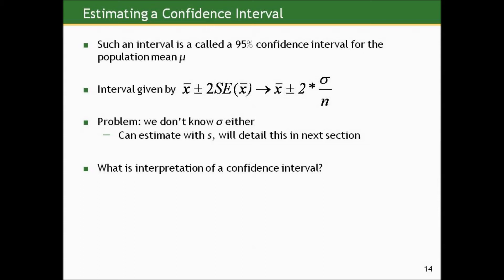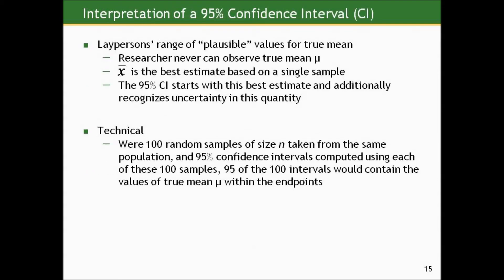But there's an inherent flaw in this: we don't know sigma either. That's a population quantity that, of course, if we're doing the study and taking an imperfect subsample, we're not going to know that either. What we're going to see in the next section is that we can estimate sigma using the sample standard deviation. But before we get to the point of estimating these, let's think about what the interpretation of such an interval is.